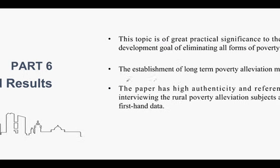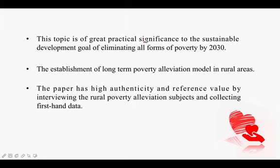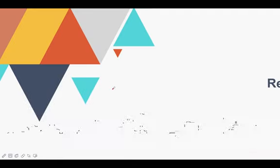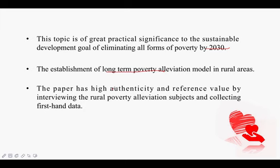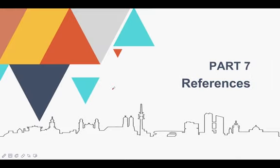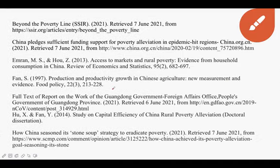In the sixth part — expected results — our research is of great practical significance to the SDG goal of eliminating all forms of poverty by 2030, contributing to a long-term poverty alleviation model for rural areas. Our paper has high authenticity and reference value by collecting first-hand data through interviews with the poor population, as we believe first-hand data is closer to real conditions than second-hand data.